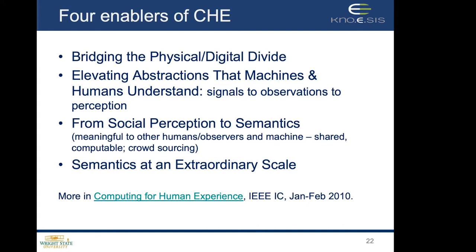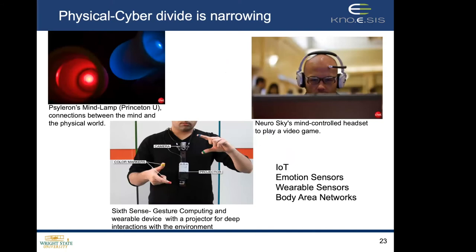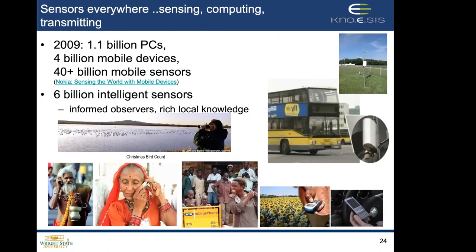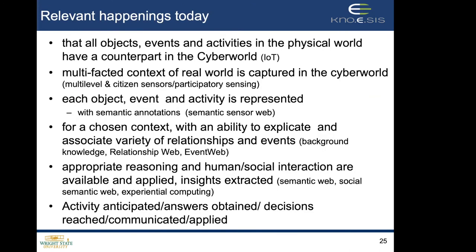There are a lot of technologies enabling these things. What used to be a so-called mind-control headset — the brain-human interface — is quite a bit of reality now. There are body area networks and wearable sensors. In 2009, there were 1.1 billion PCs, 4 billion mobile devices, 40+ billion mobile sensors, and 6 billion intelligent sensors in humans who are observing, texting, sending photographs, and capturing video. That creates a very powerful source of data and information.